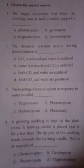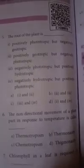The root of the plant is positively geotropic. The second option is correct: positively geotropic but negatively phototropic. Positively geotropic and negatively phototropic — same answer.